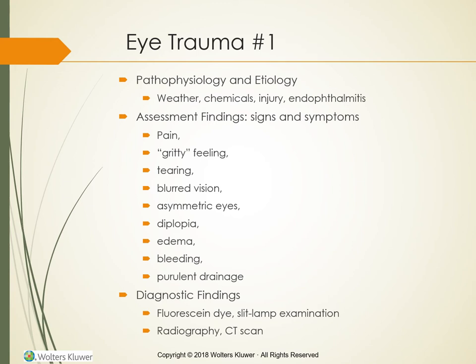To evert the eyelid, the examiner gently grasps the upper eyelashes and pulls downward, then places an applicator — a long Q-tip — midway on the upper lid, using slight pressure to evert the lid over the applicator. The eyelid resumes its normal position when the client looks upward or the eyelash is pulled gently forward. Diagnostic findings: fluorescent dye staining identifies a minute foreign body or abrasion to the cornea. A slit lamp examination provides magnification to visualize structures in the anterior and posterior segments. X-rays, computed tomography, and possible MRI help find a penetrating foreign body; an X-ray or CT confirms an orbital fracture.